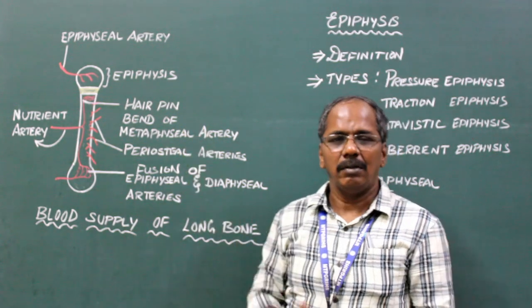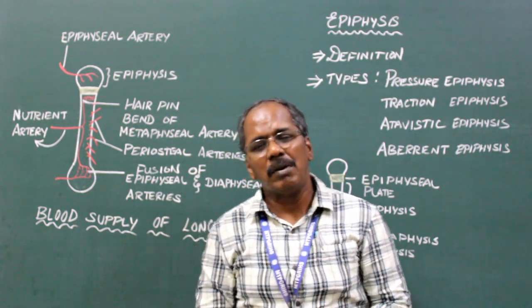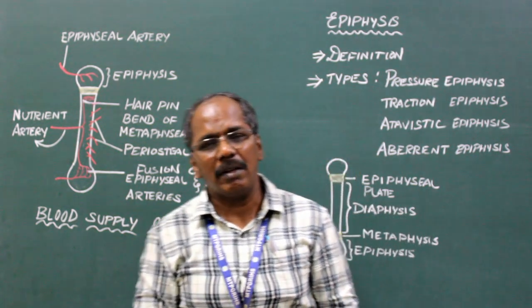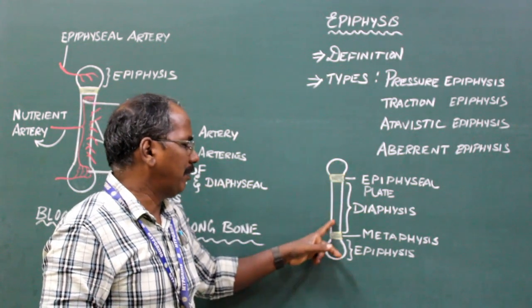Blood supply of bone. A long bone consists of three parts: two ends and a shaft.